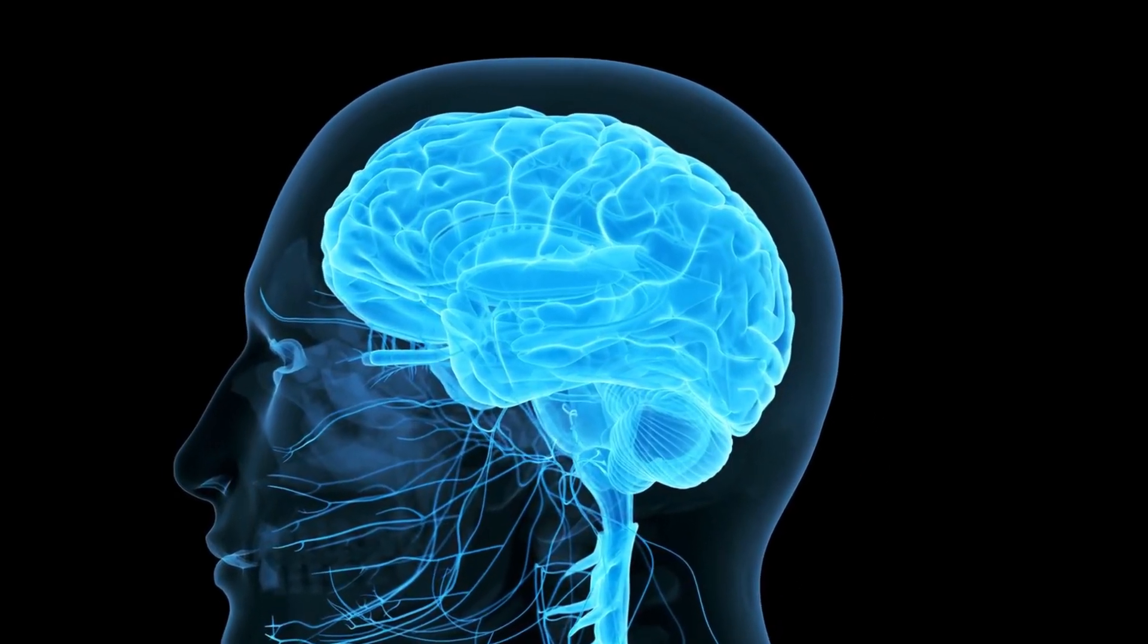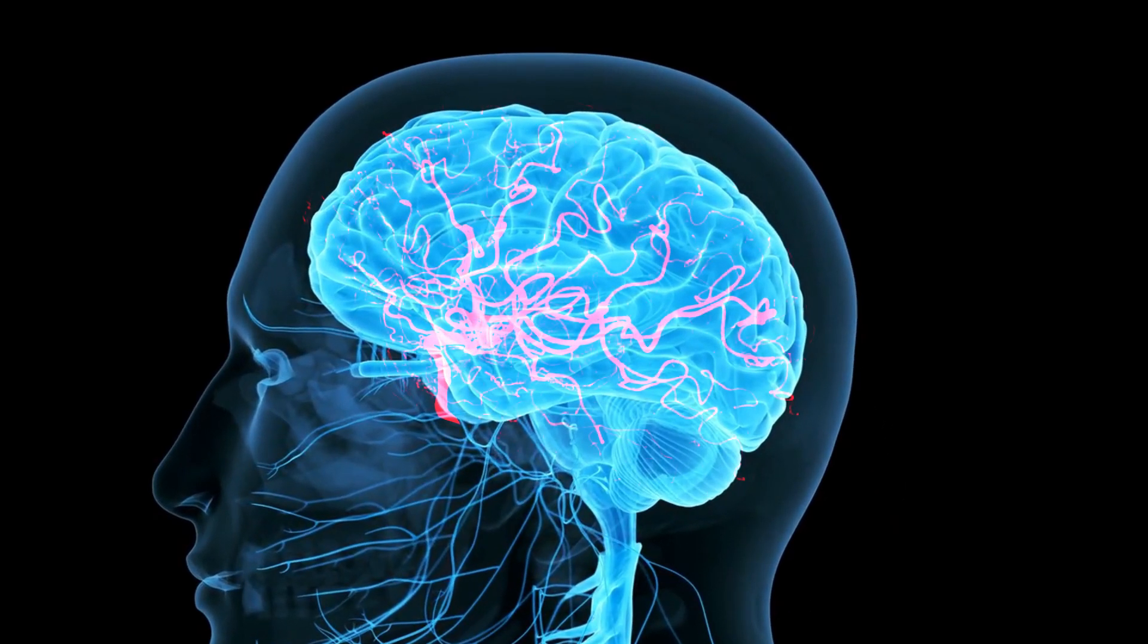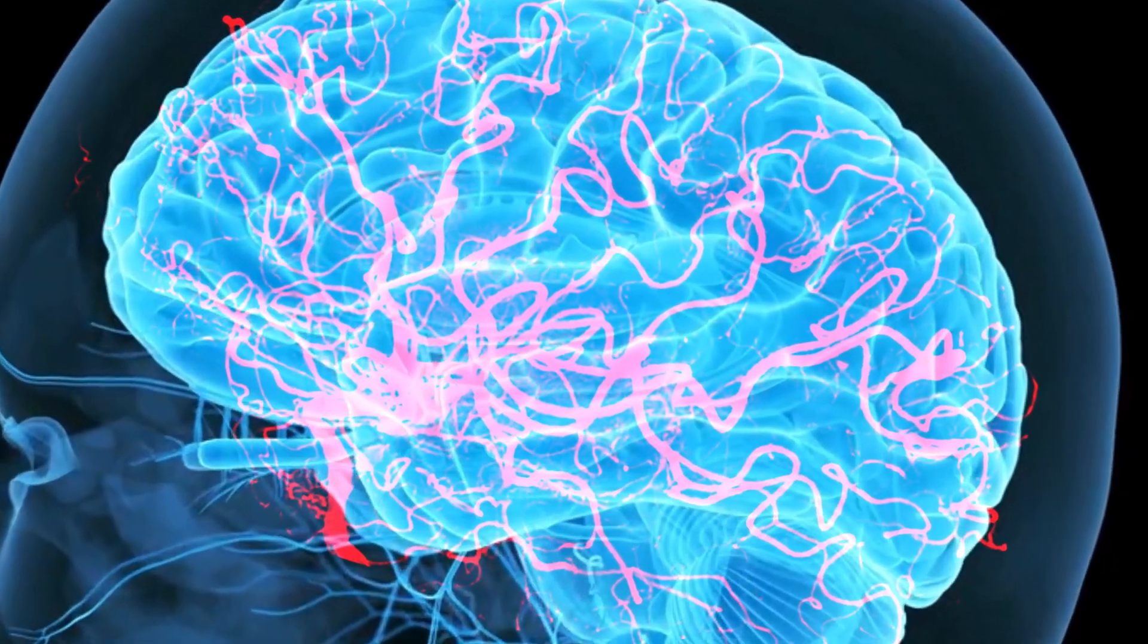Like all organs in the human body, the brain receives oxygen and nutrition from blood flowing through small vascular vessels.